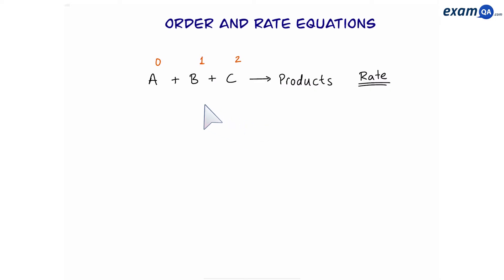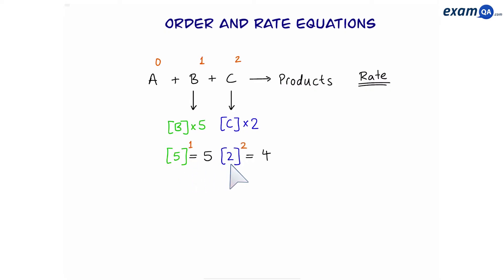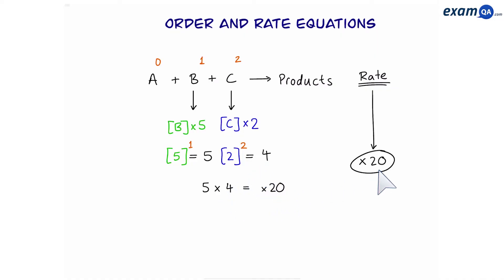How about if we have two things changing at the same time? Let's say we multiply the concentration of B by five and multiply C by two. Remember, B is first order and C is second order. What will happen to the total rate? Five to the power of one is five, and two to the power of two is four. We're going to times them together and that gives us 20, meaning that the rate will become 20 times faster. Now, since A is zero order, it will have no effect — so even if we times A by a million, the rate will still be 20 times faster.